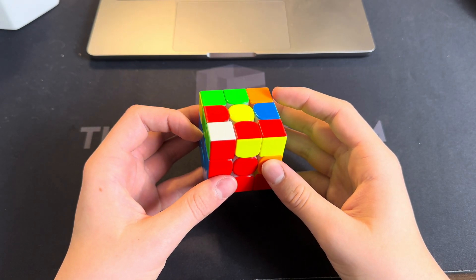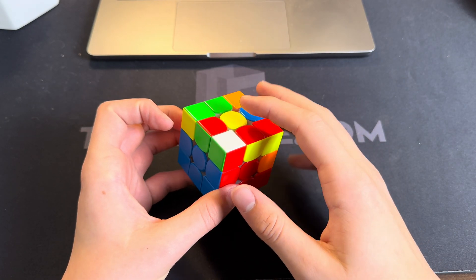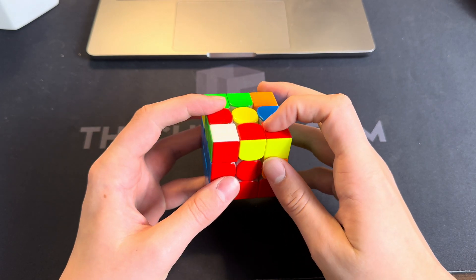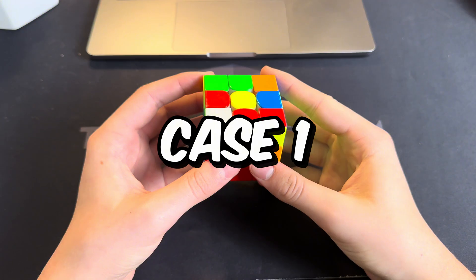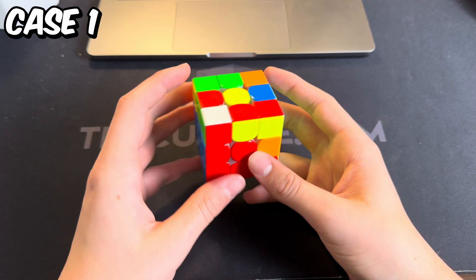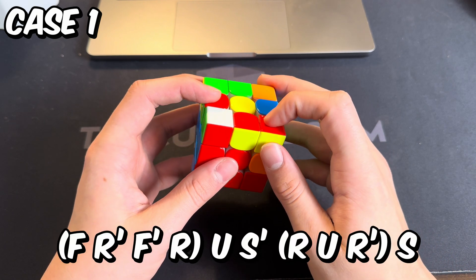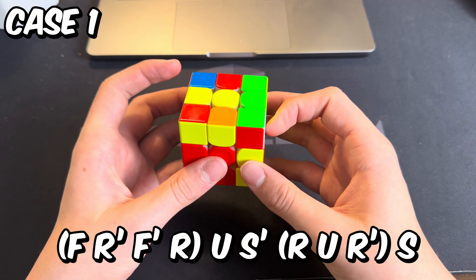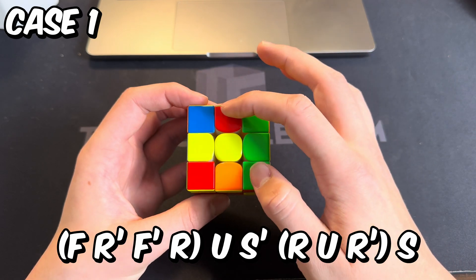Hey guys, here are five more ZBLS cases when there's a dot and the F2L pieces are touching. This case where there's white on top and the two pieces are matching is pretty simple. You start it off with the hedge, then do a U move, and before inserting this pair...